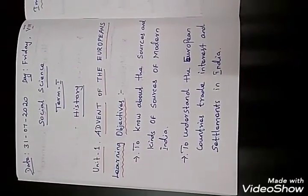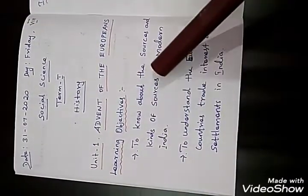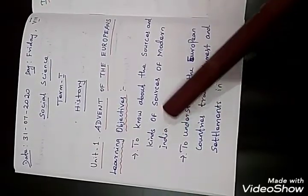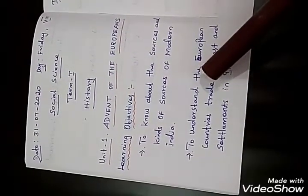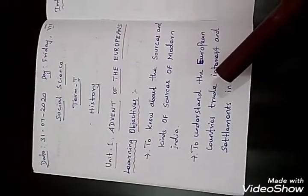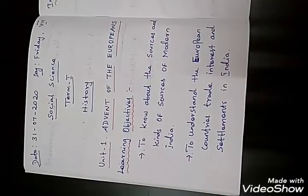In every lesson, after completing the lesson, you have to learn something. In this lesson, you have to learn: first, to know about the sources and kinds of sources of modern India; second, to understand the European countries' trade interests and their settlements in India. These are the two main objectives you have to learn.